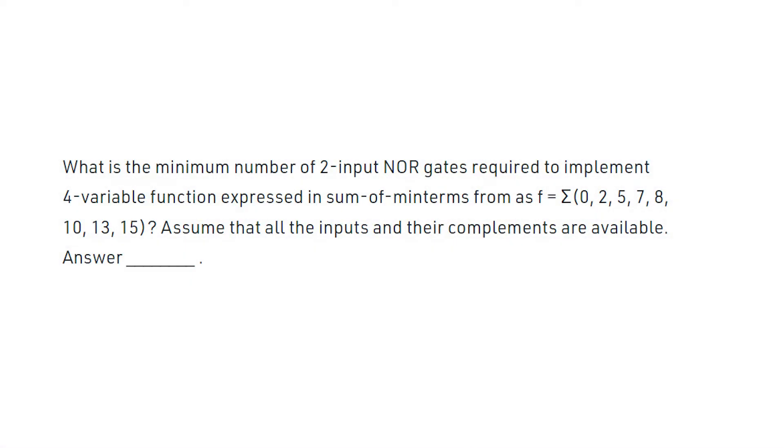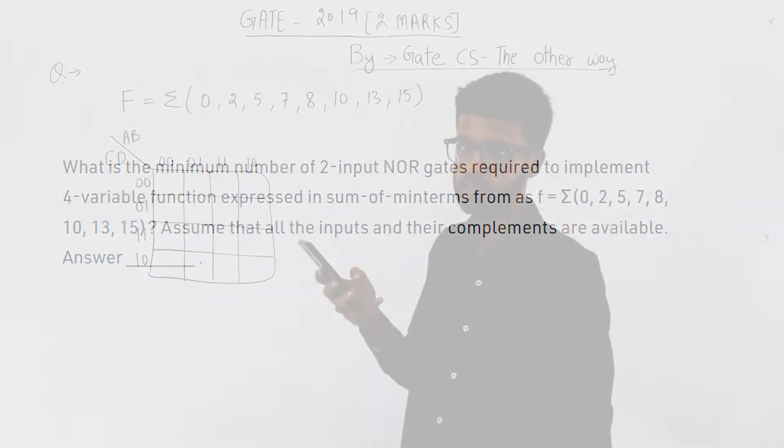What is the minimum number of two input NOR gates required to implement a 4 variable function expressed in sum of minterms form as f equals sum of 0, 2, 5, 7, 8, 10, 13, 15. Assume all the inputs and their complements are available.